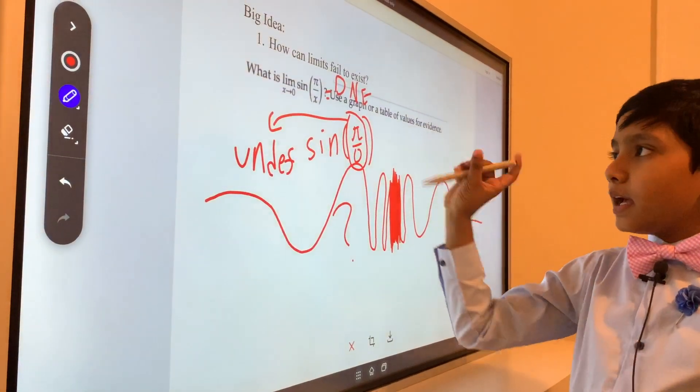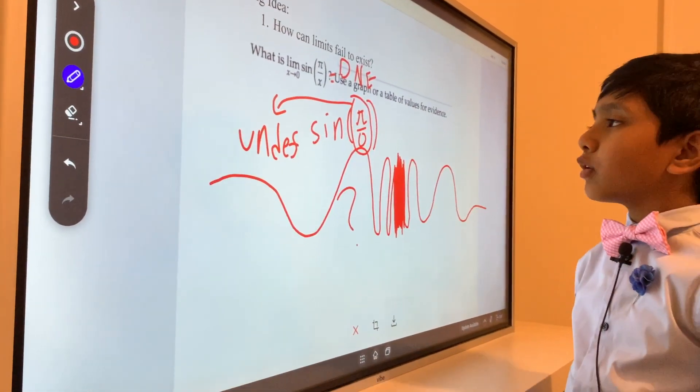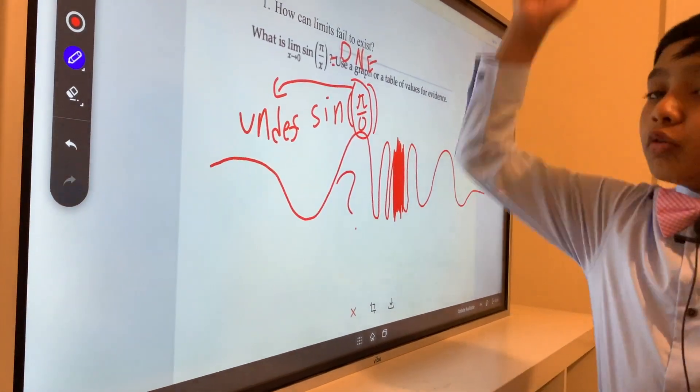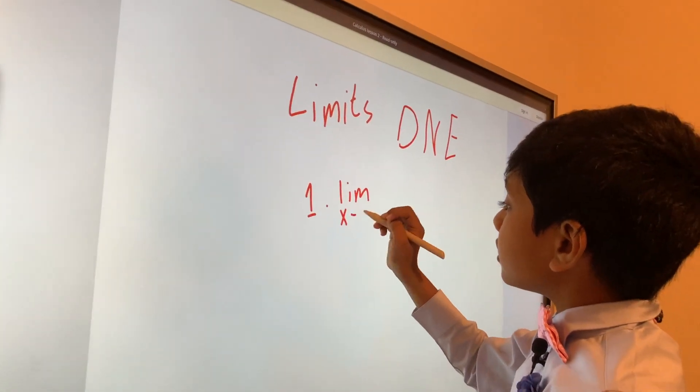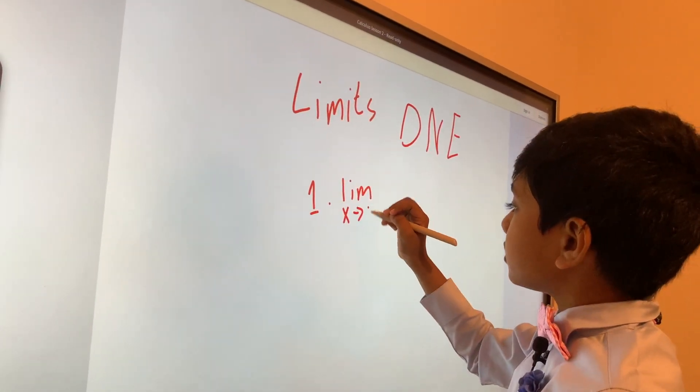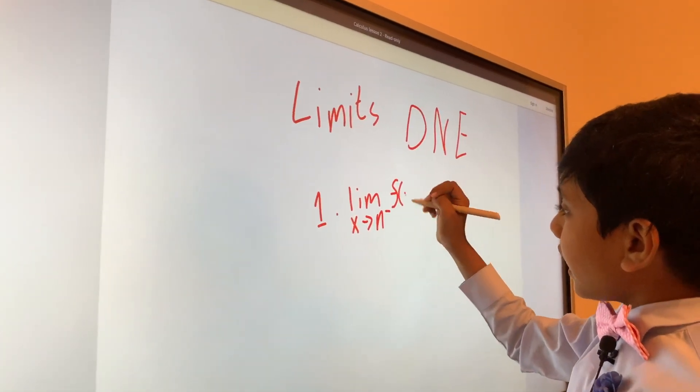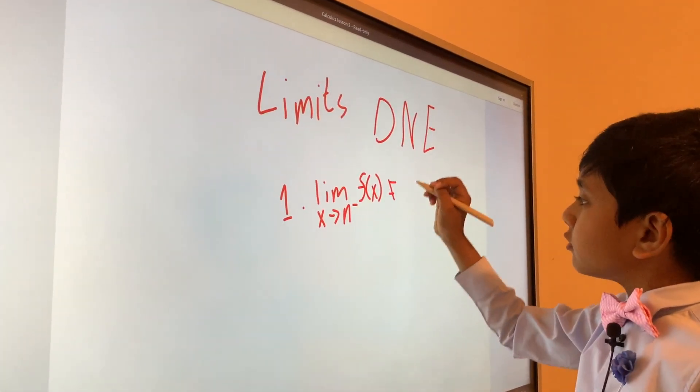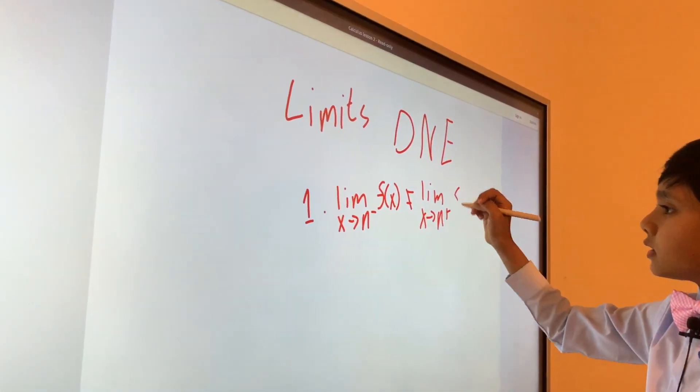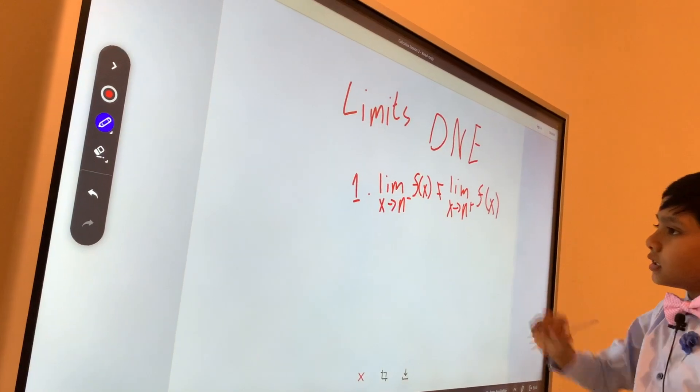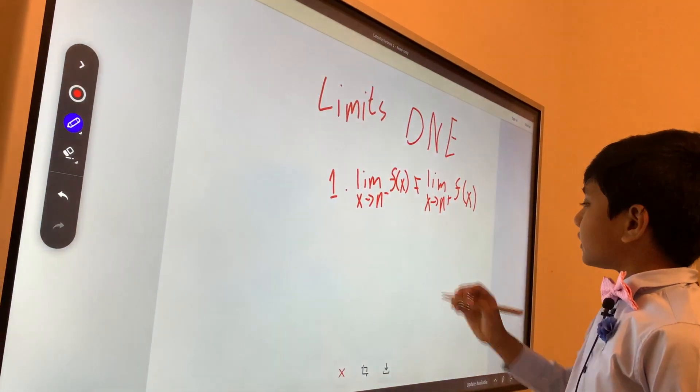That means the limit of sine pi over x as x approaches zero does not exist if the limit as x approaches from the left of f(x) is not equal to the limit as x approaches from the right of f(x).